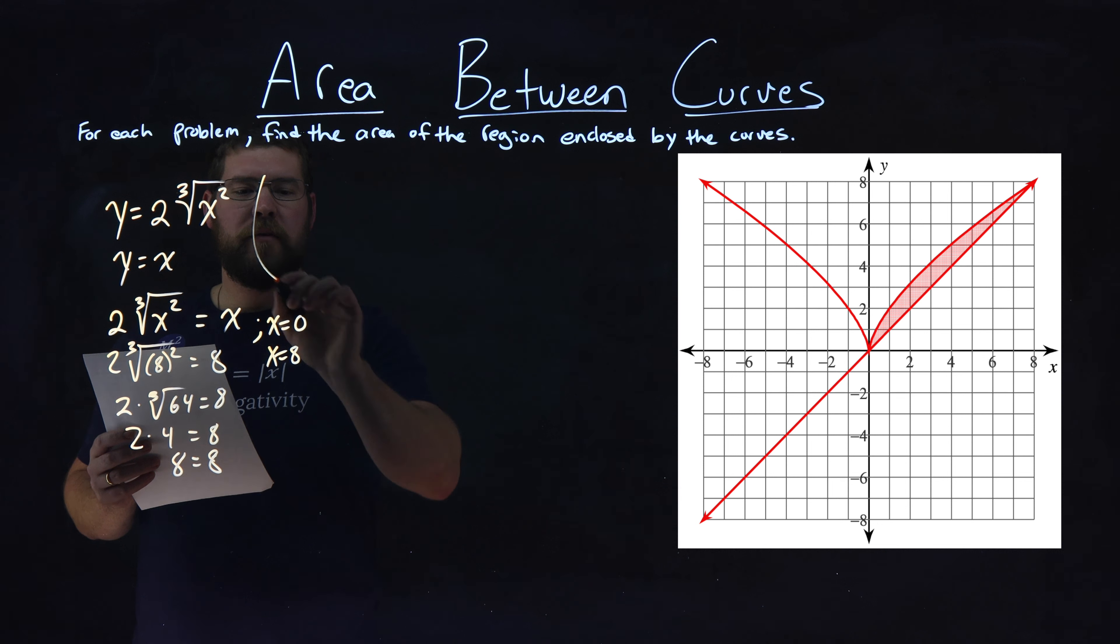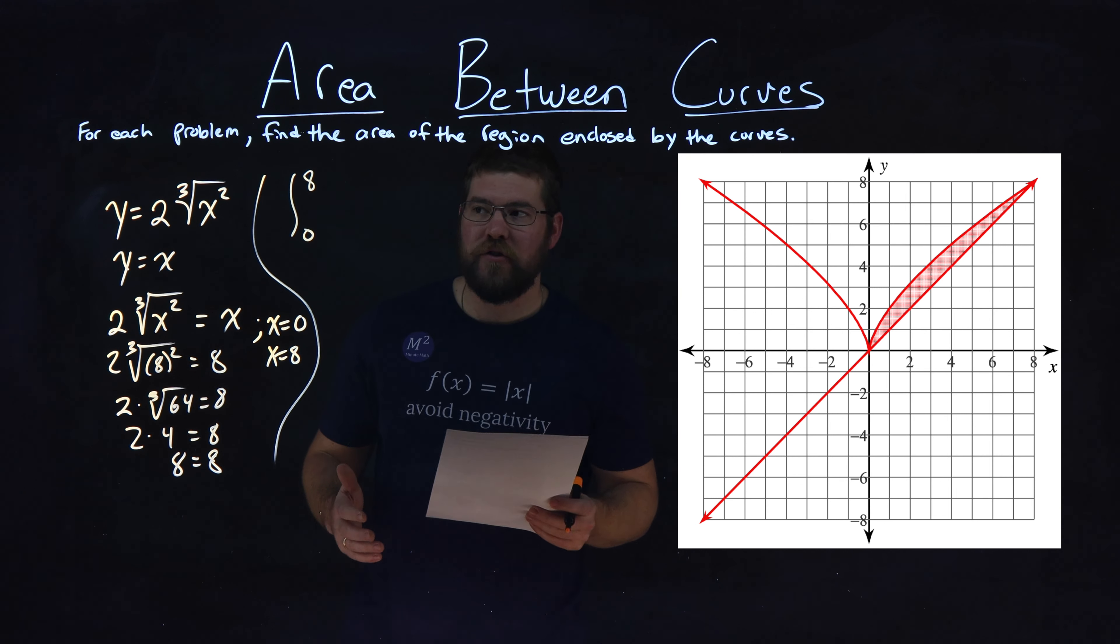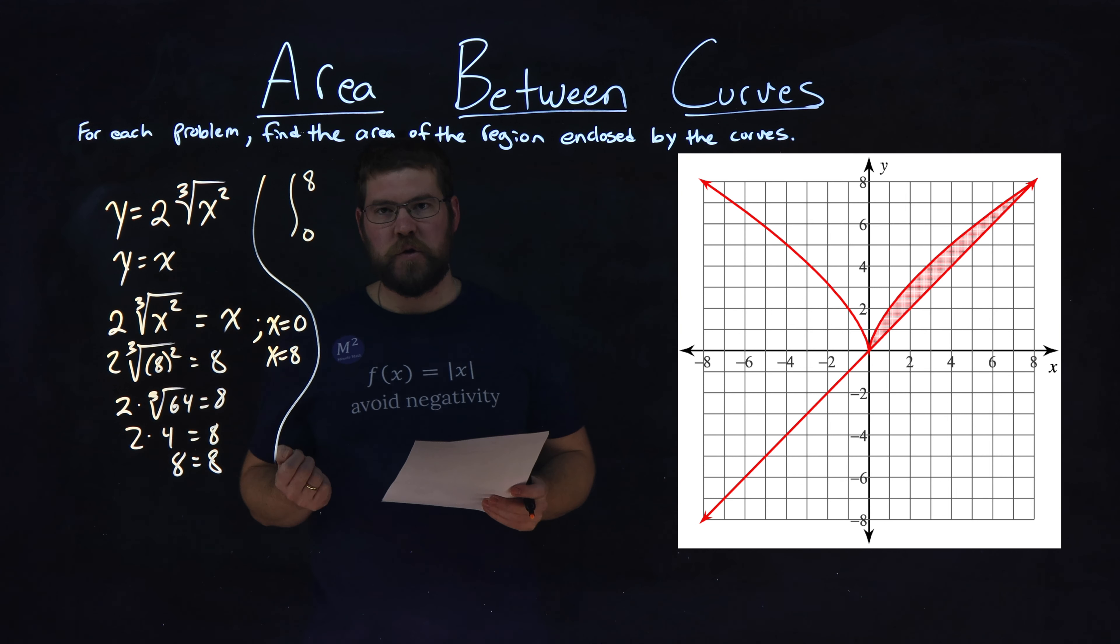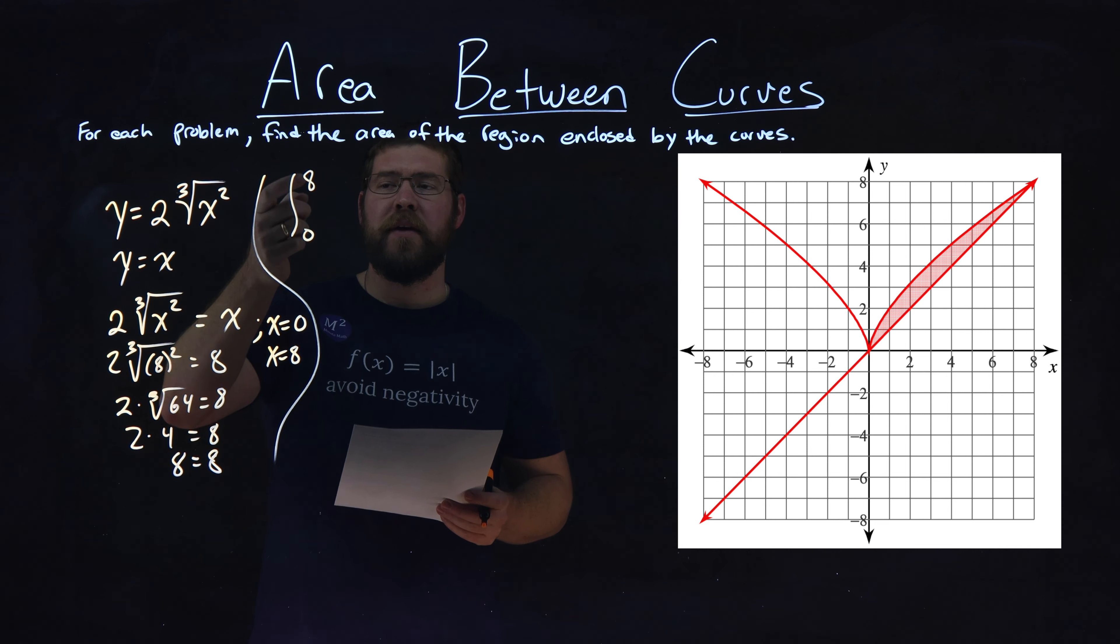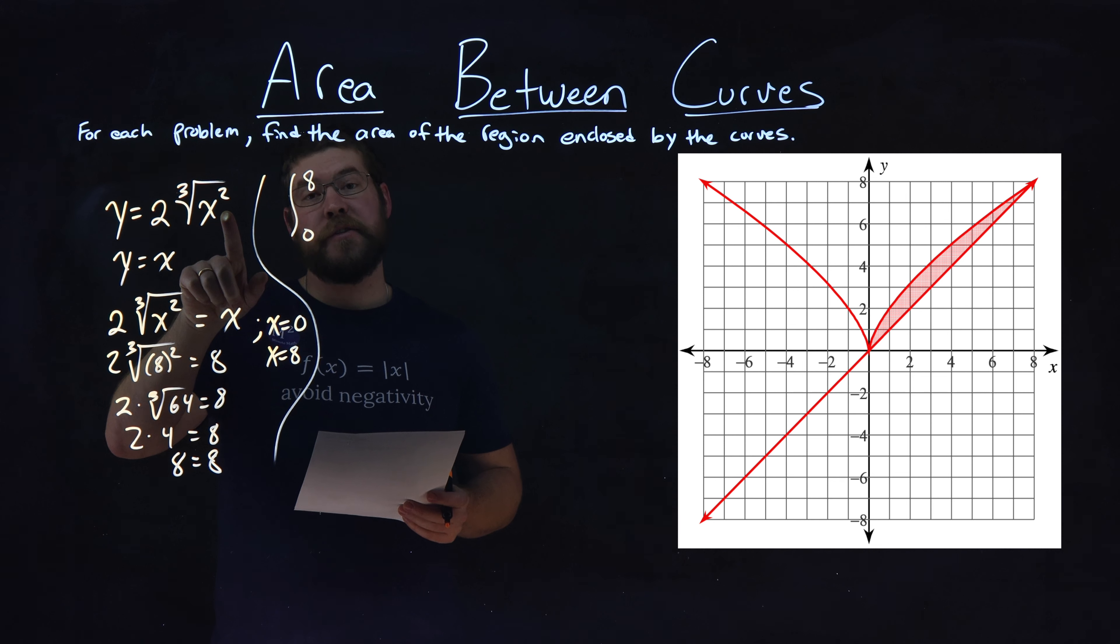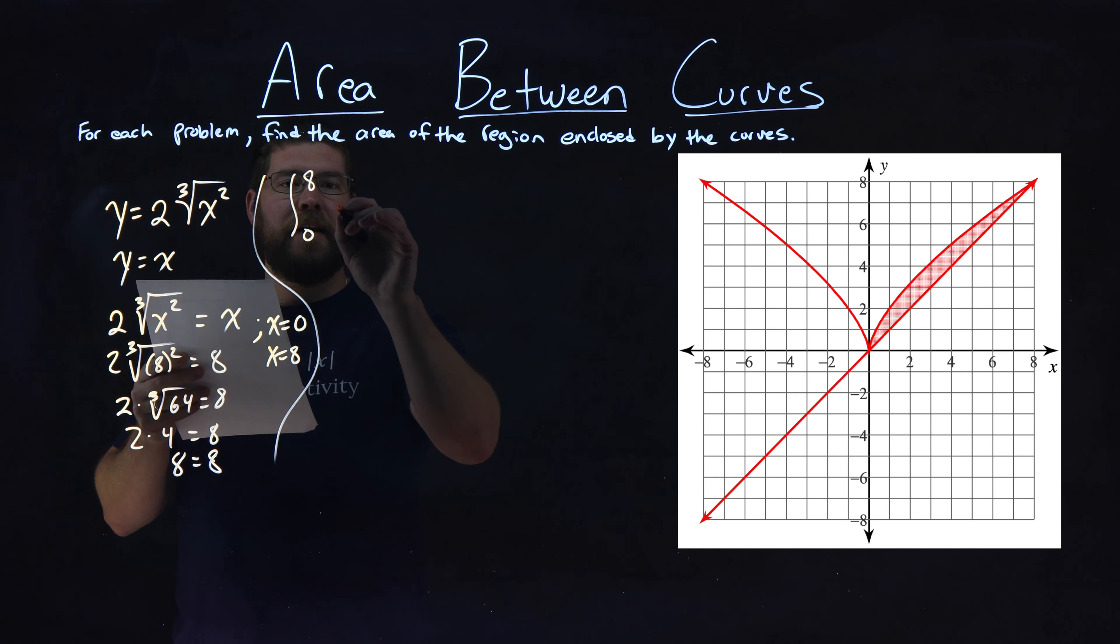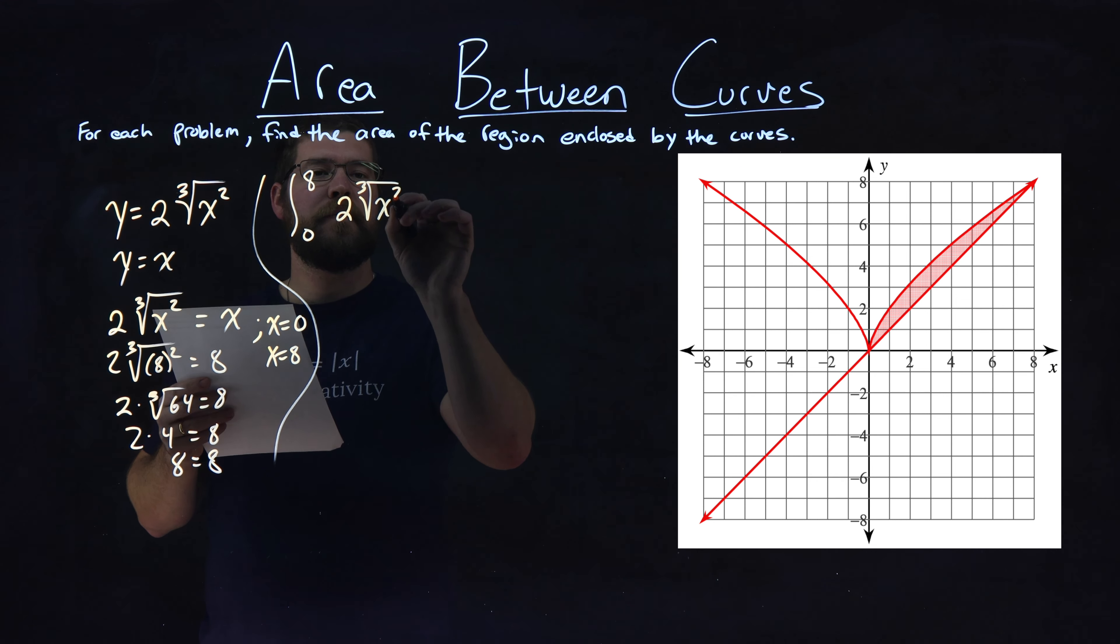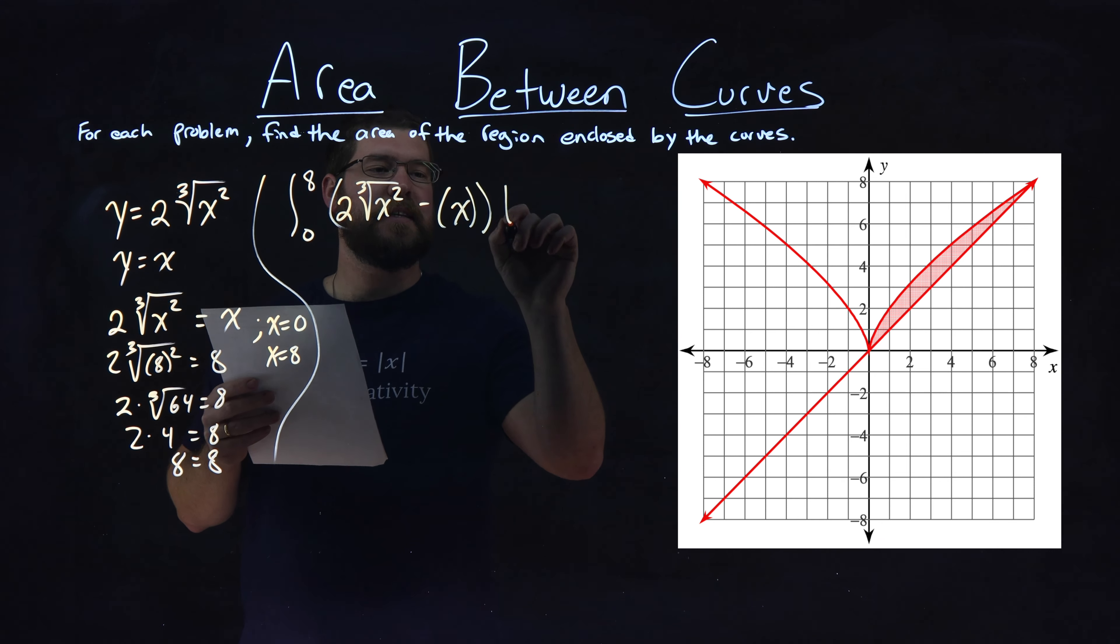These are going to be the bounds of the integration, the integral from 0 to 8. Now, we want to find the upper equation over this interval. An easy way to do it: just plug in 1 for x and see which one's higher. It's within the interval. 1 for x is 1 here; here, it's 2. 2's going to be higher. That's the upper equation. So we have 2 times the third root of x squared minus x dx. Not too bad.